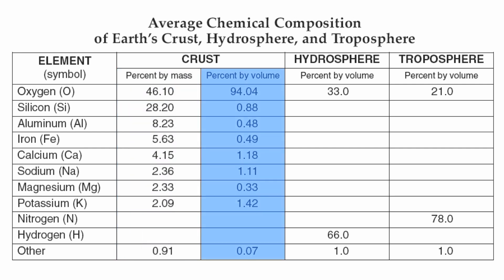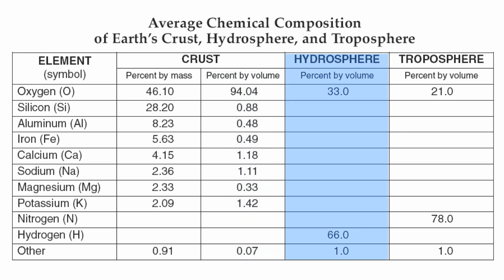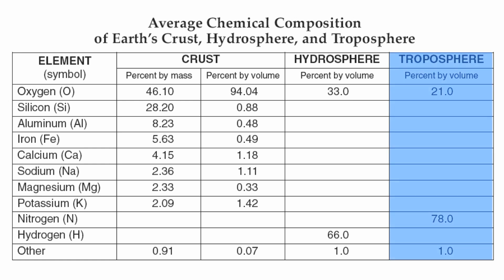It's very important to know the difference. The next section over is going to be the hydrosphere — this is going to be the water portion of our Earth. Again, those numbers there are represented by percentages by volume. And then finally, the troposphere, which is a portion of the atmosphere — again, percentages by volume.